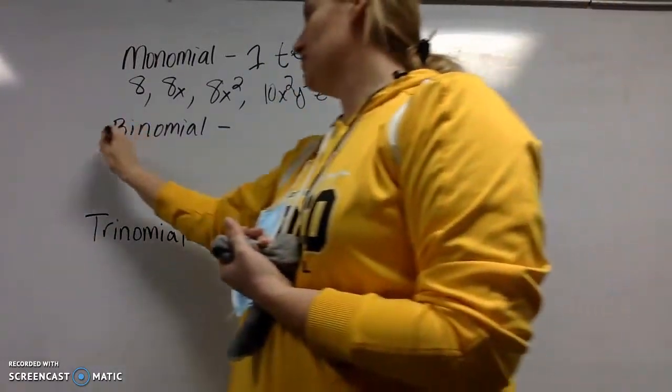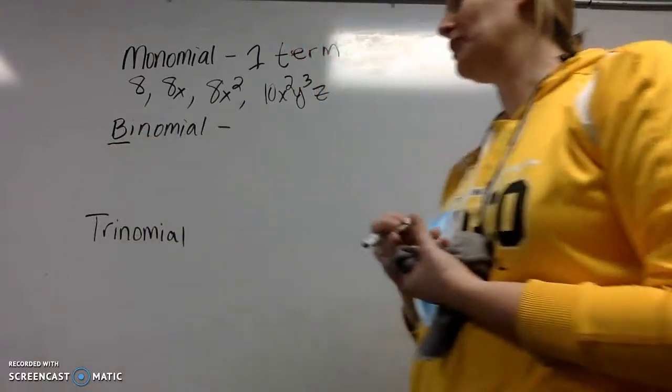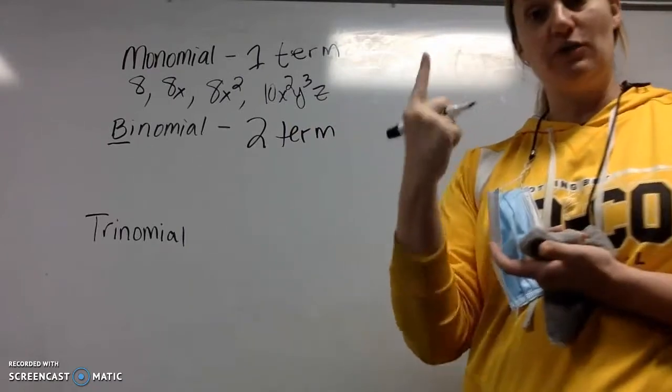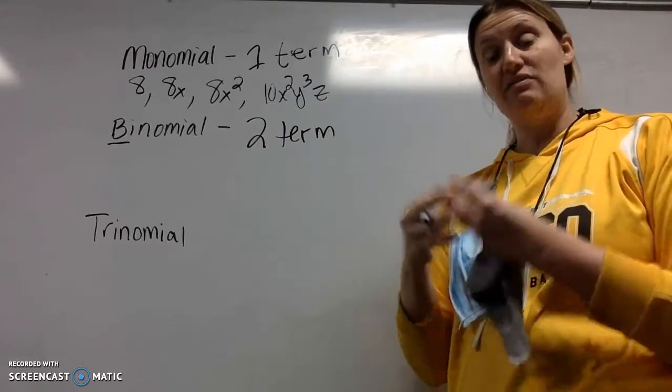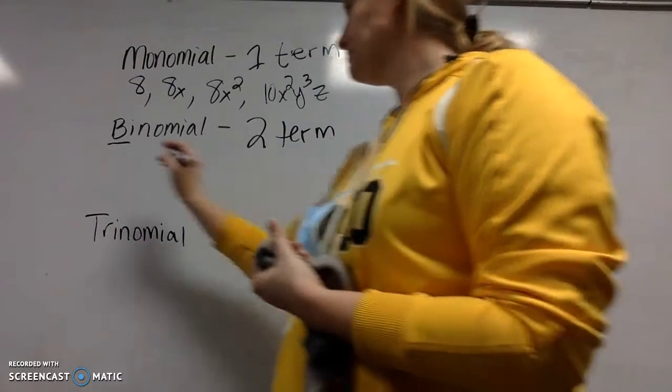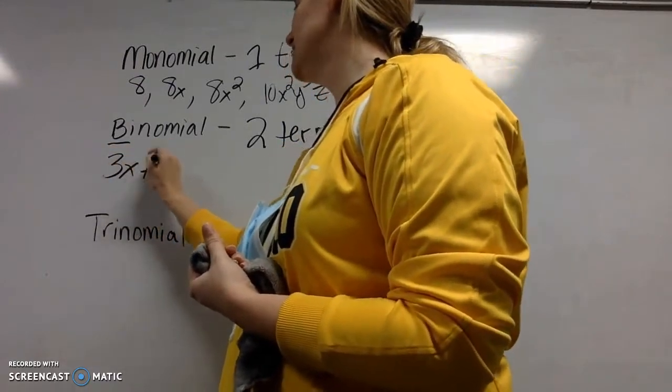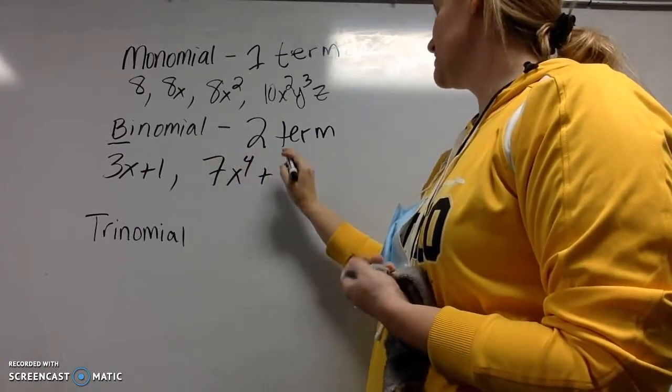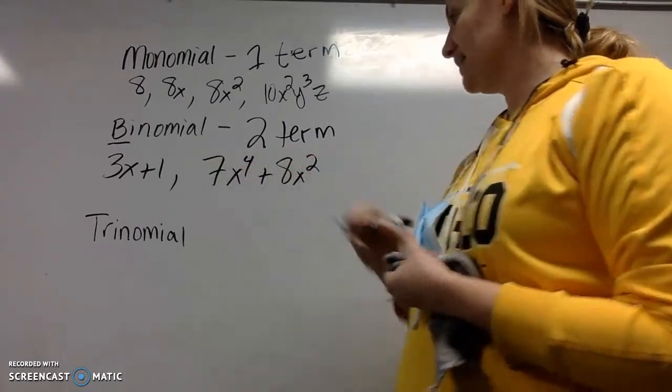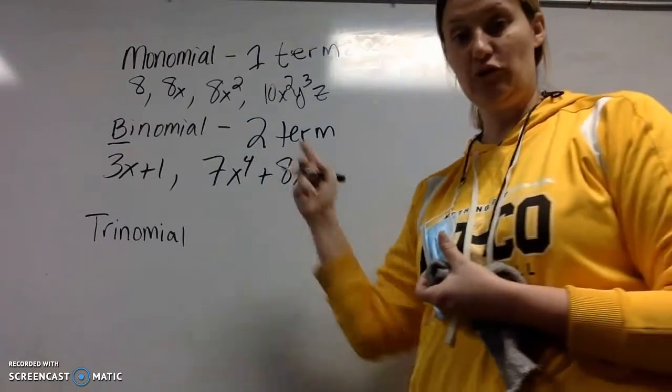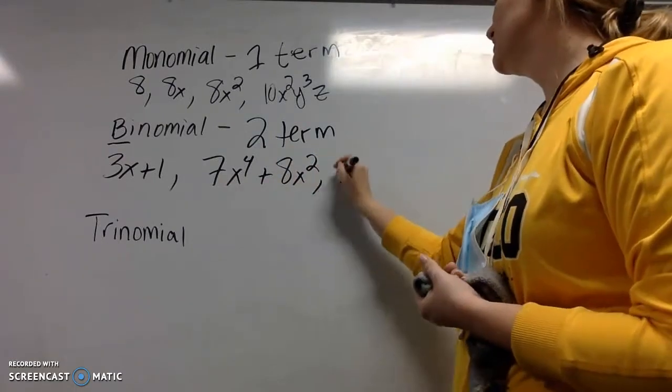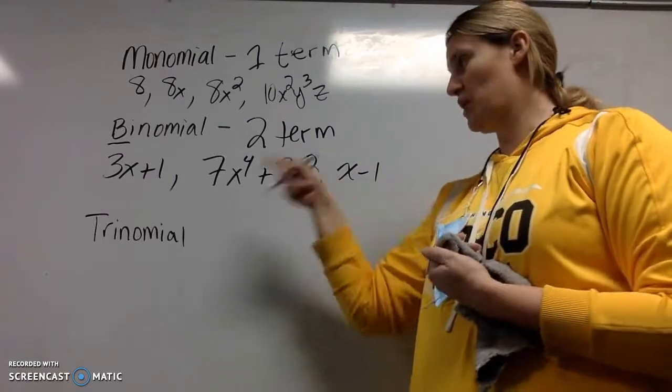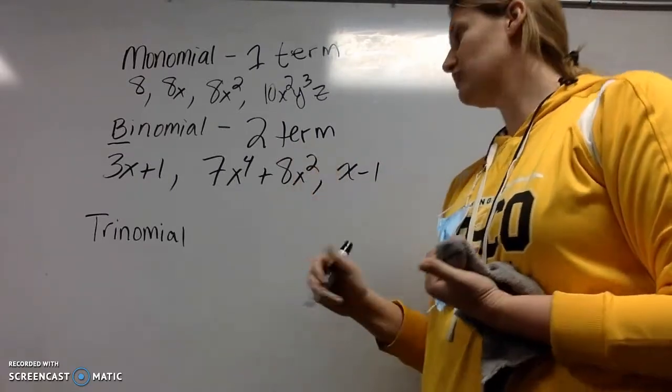So binomial, bi means two. Nomial means term. So you're talking a polynomial with two terms. And so here you'll see one addition or subtraction sign that will separate our two terms. So 3x plus 1 is a binomial. 7x to the fourth plus 8x squared is a binomial. There are two terms there. X minus 1. Of course, you can have different variables than x. That's just the one I tend to go to. Those are all binomials.